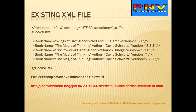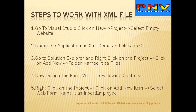The existing XML file contains a BookList with book entries having name, author, and version attributes - for example, 'Wings of Fire' with different versions. To work with this XML file, follow these steps: first open Visual Studio, click on New Project, then select Empty Website. You can also implement this in a console application - the base business logic is the same for any application type, whether Windows, console, or web.